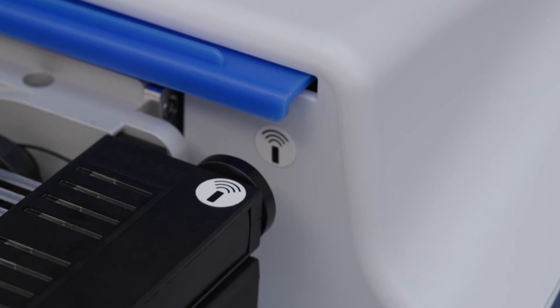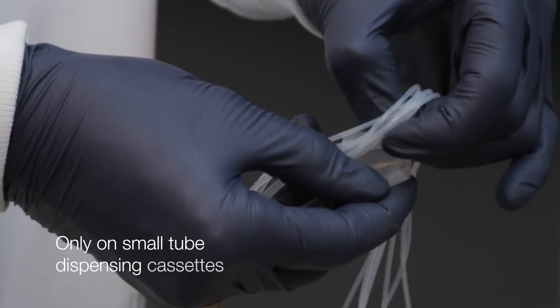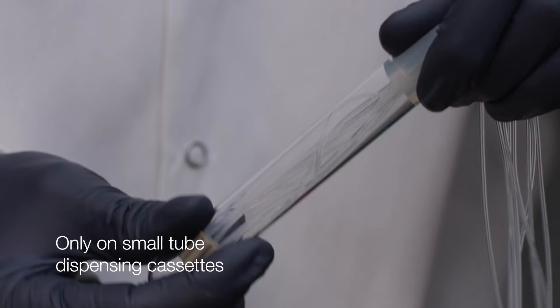If you are using a Smart Plus model, you'll be able to track cassette life. Next, remove the rubber holder and the tubing protection tube.